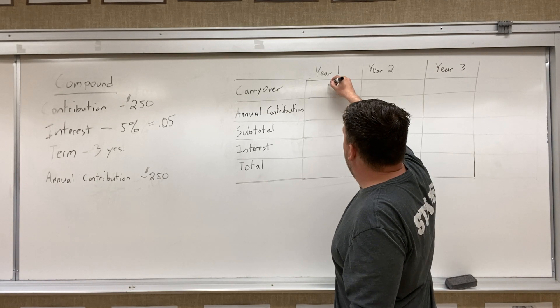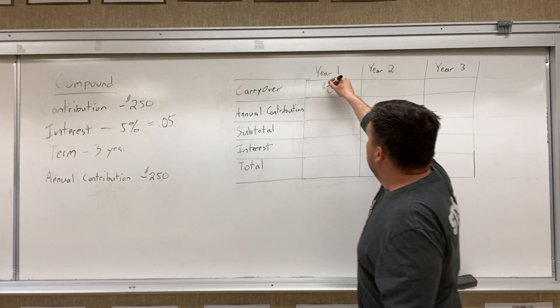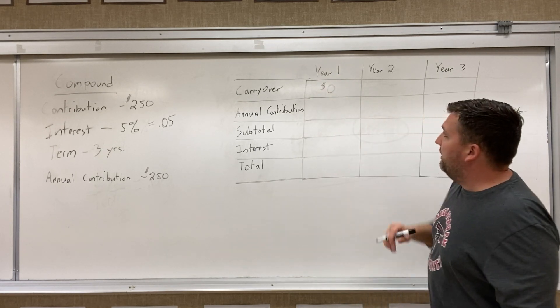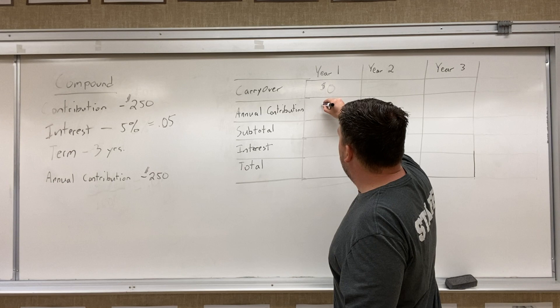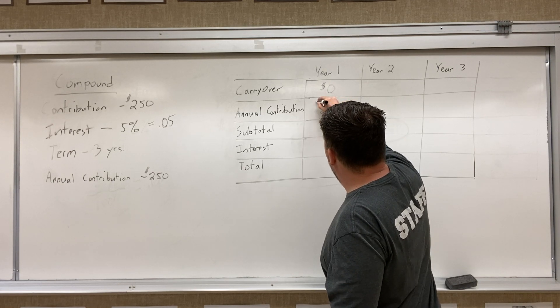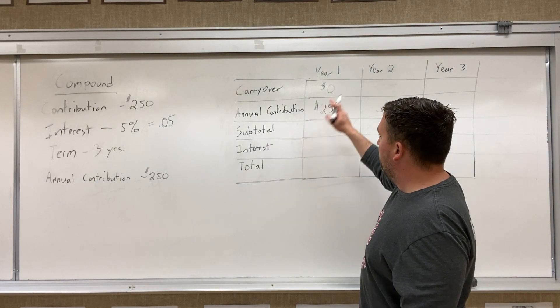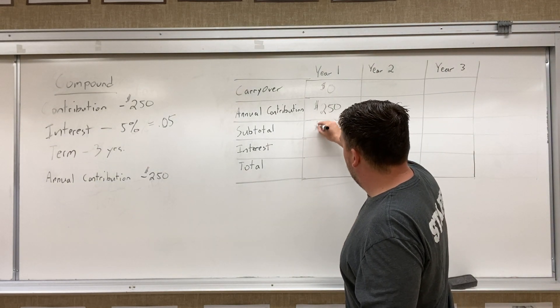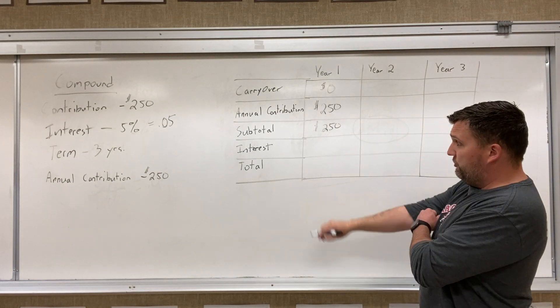So in the first amount, we're gonna have zero dollars. Sorry, my pen's starting to die a little bit here. We're gonna have zero dollars in the beginning. We're gonna have an annual contribution. So the beginning one, we're just gonna say in year one, it was $250. So our subtotal in the first year is just what our initial investment is of $250.